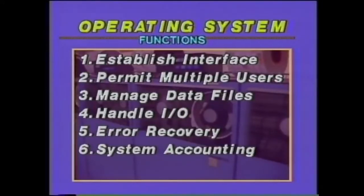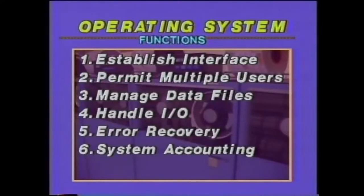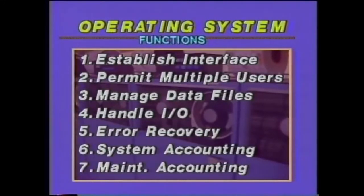System accounting is a sixth operating system function — it keeps track of machine resources so costs can be apportioned among multiple users: how much CPU time is used by each application, how many disk and tape records are written and read. The last function provides maintenance accounting, keeping track of correctable machine errors to aid replacement of failing components. Operating systems for today's microcomputers are approaching this level of sophistication. Gary Kildall shows one of his latest in the next segment.